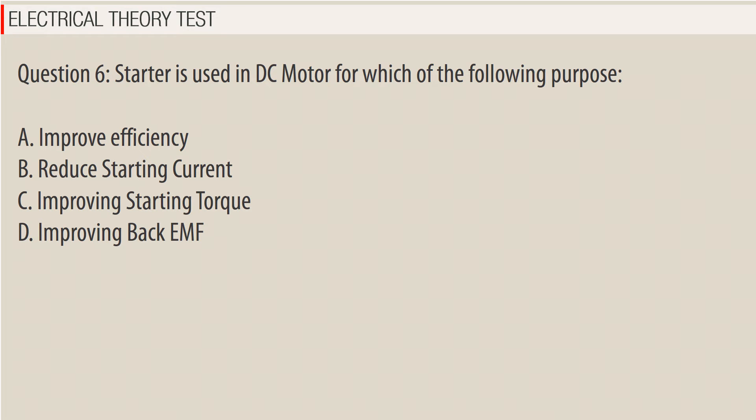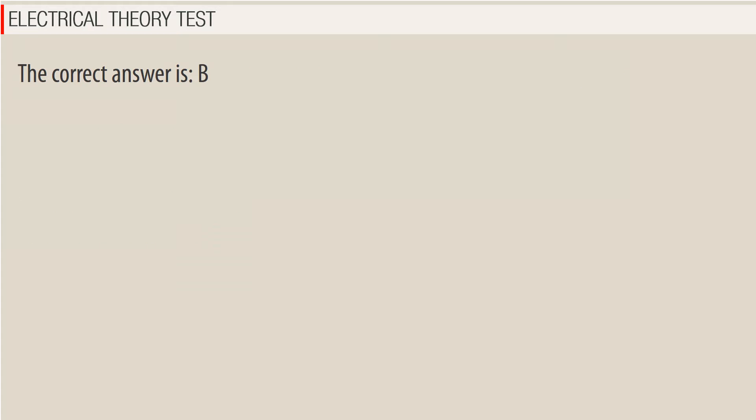Question 6: A starter is used in a DC motor for which of the following purpose? A. Improve efficiency, B. Reduce starting current, C. Improving starting torque, D. Improving back EMF. The correct answer is B.